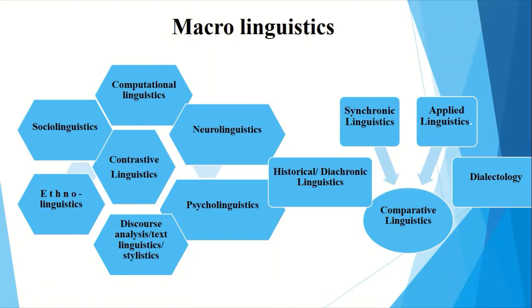Macro linguistics consists of 12 different areas, as shown in the diagram. These are: computational linguistics, sociolinguistics, contrastive linguistics, neurolinguistics, psycholinguistics, discourse, text analysis or stylistics, historical or diachronic linguistics, synchronic linguistics, applied linguistics, dialectology, and comparative linguistics.